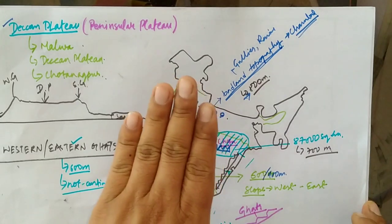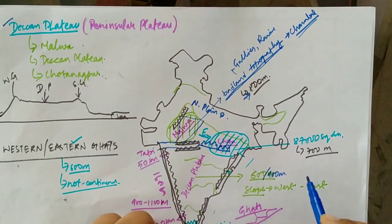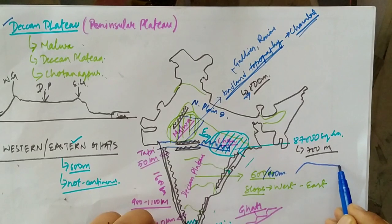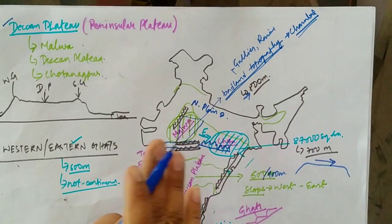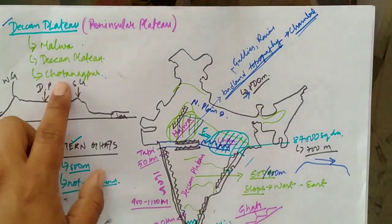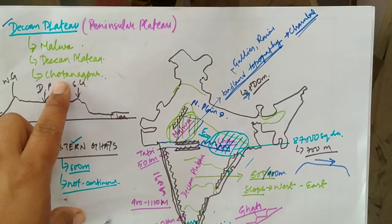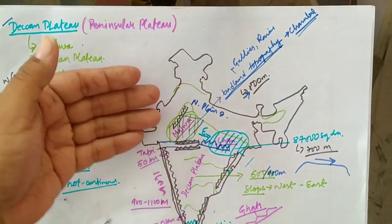This is all because of the slope of the Deccan Plateau. If you see in the diagram, the slope of the Deccan Plateau is from the Arabian Sea side towards the Bay of Bengal.